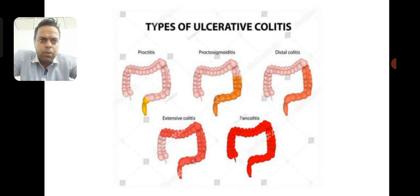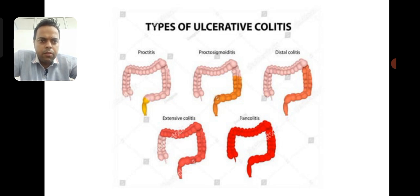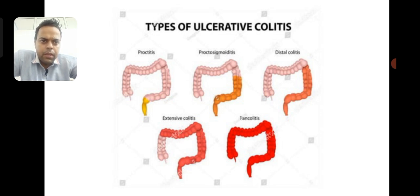You can see the types of ulcerative colitis: first is proctitis, where only the rectal area is active; then proctosigmoiditis, involving the sigmoid colon; distal colitis, covering a slightly larger part of the sigmoid colon; extensive or left-sided colitis, covering approximately all areas of the large intestine except the right side; and pancolitis, the most severe form in which all areas of the large intestine are affected.